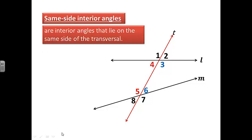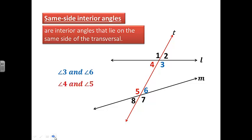Same side interior angles are interior angles that lie on the same side of the transversal — the name says it all. In this example, angle 3 and angle 6 are same side interior angles. Again, they are on the same side of the transversal and they are in between line L and line M. Another example of same side interior angles would be angle 4 and angle 5.